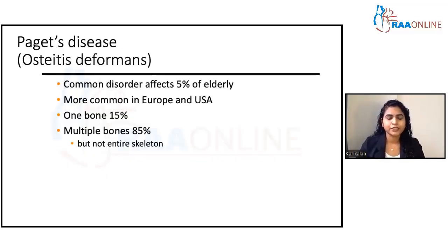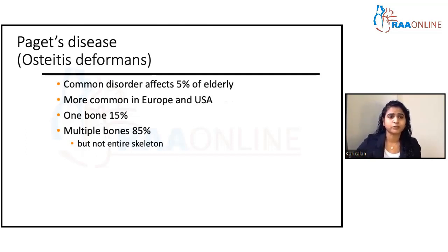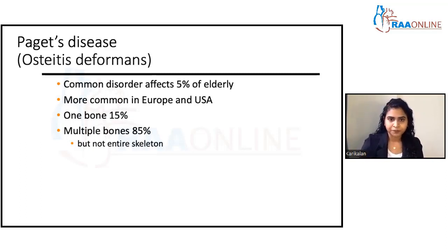Moving on to Paget's disease. This is also called osteitis deformans. There is another Paget's disease in the breast, but these two diseases are in no way related. Paget's disease of bone is very different from that which you see in the breast — totally different concepts.